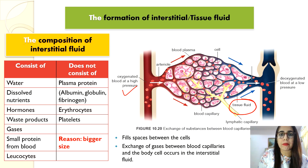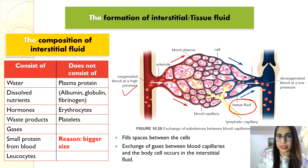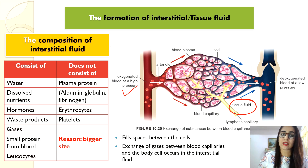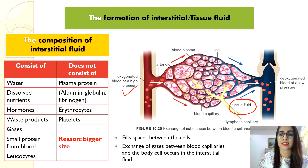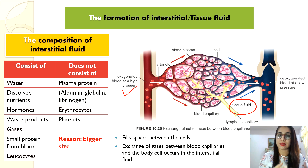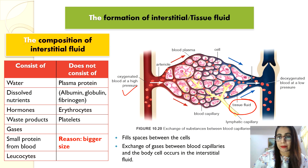Tissue fluid flows to supply essential substances to the cells, such as oxygen, glucose, amino acids, fatty acids, ions, and vitamins. It also receives carbon dioxide and excretory products from the cells. You can see the composition of interstitial fluid from the slide.